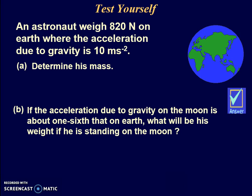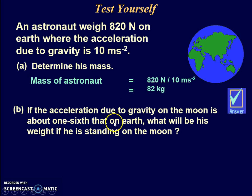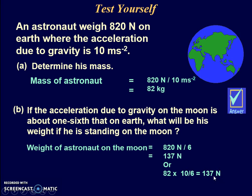Let's try another question. An astronaut weighs 820 Newtons on earth where the acceleration due to gravity is 10 m/s². Determine his mass. Using W = mg, making m the subject: m = w divided by g = 82 kg. If the g value on the moon is one sixth that on earth, what will be his weight on the moon? Mass remains 82 kg; g on the moon is 10/6. So the weight on the moon is 137 Newtons.